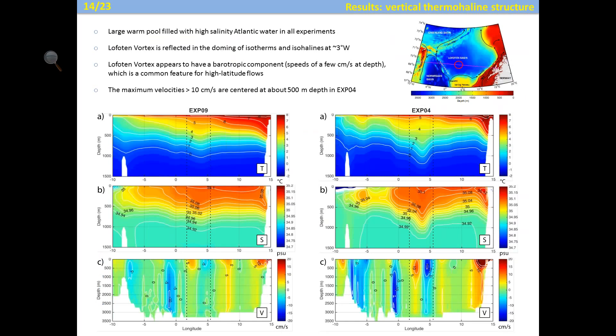Vertical sections of temperature, salinity, and meridional velocity across the Lofoten Vortex show that the 9 km experiment reproduces a relatively weak vortex, while the 4 km experiment best simulates it — with a core of velocities located at about 500 meters depth reaching up to 20 centimeters per second. For the following analysis, we use only the 4 km experiment as the best experiment for simulating the Lofoten Vortex.